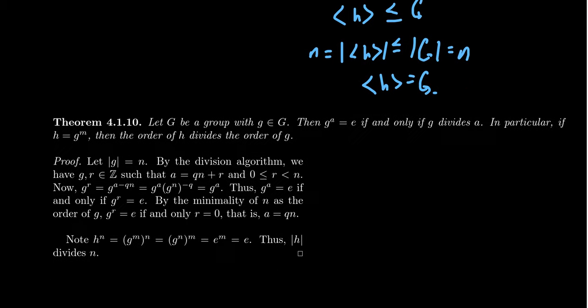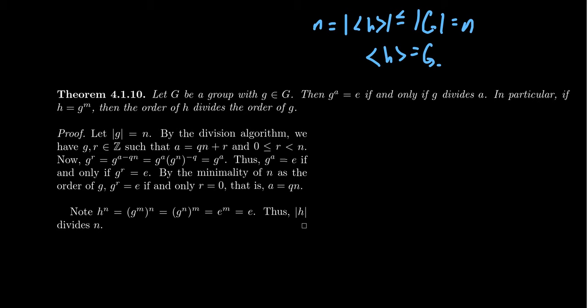Let's follow up with another theorem. If G is a group with an element little g, then G to the a equals the identity if and only if the order of G divides a. So a itself must be a multiple of the order of G. In particular, if H equals G to the m for some power m, then the order of H divides the order of G.